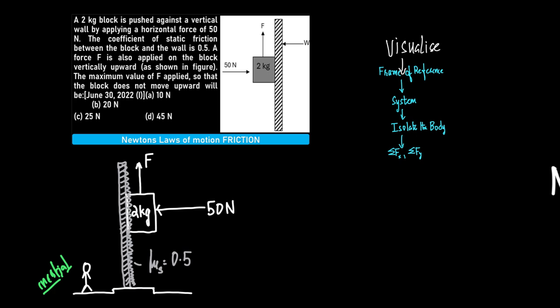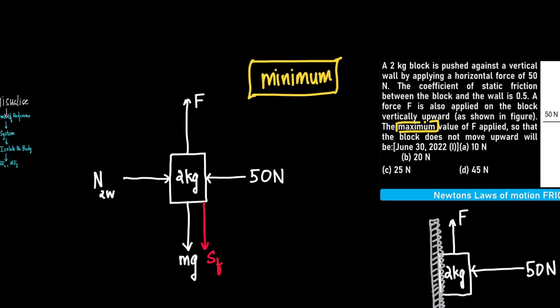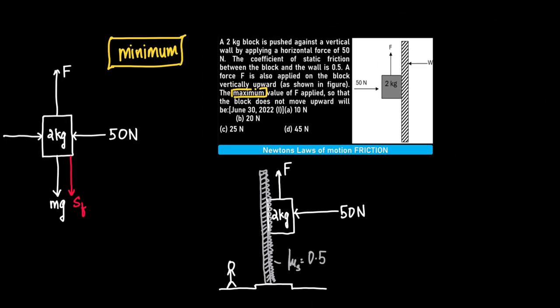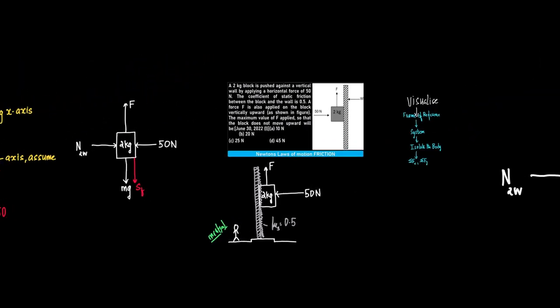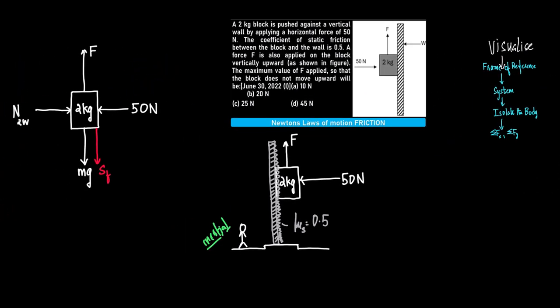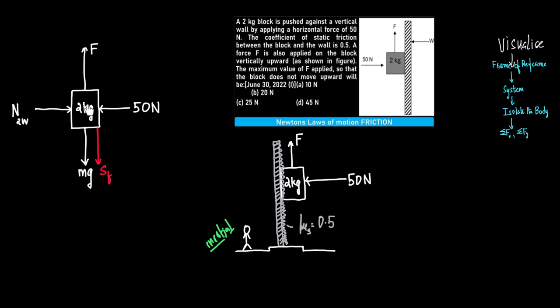Before we do this, I will give you the free body diagram. The free body diagram of this 2 kg block is like this. By virtue of being in contact with this wall here, the wall will exert a normal reaction on the block.